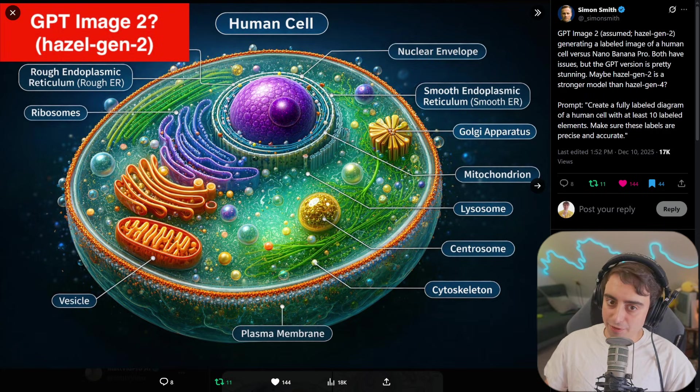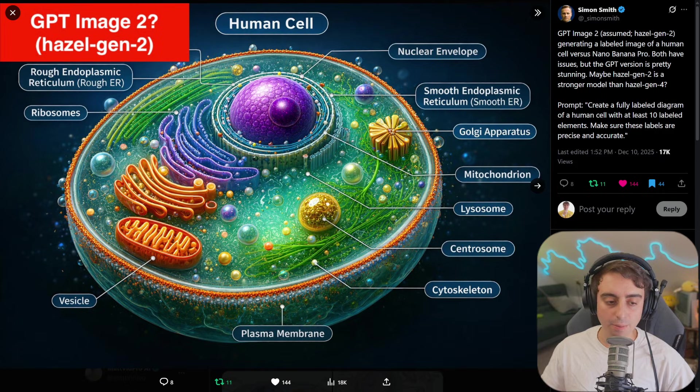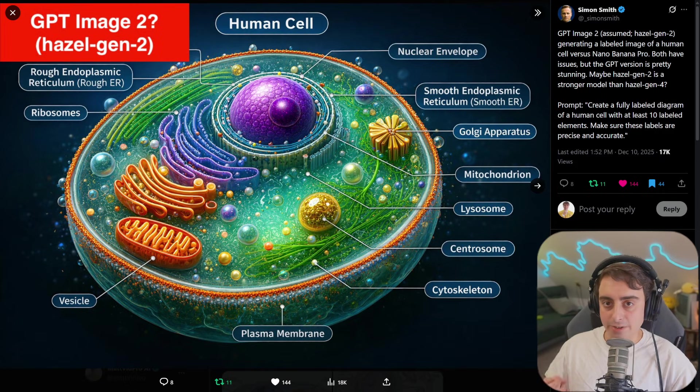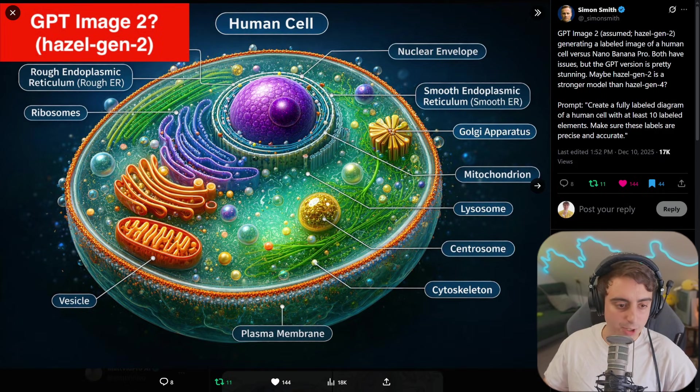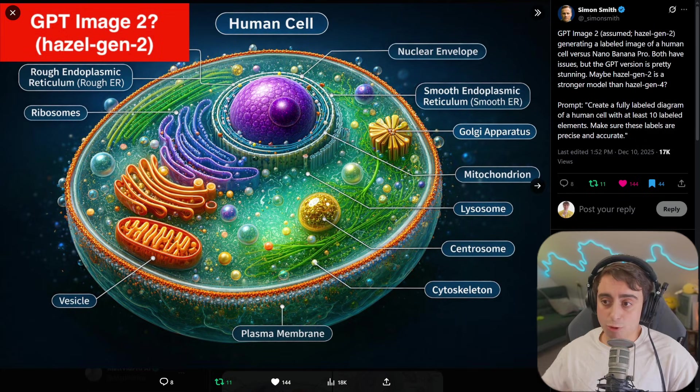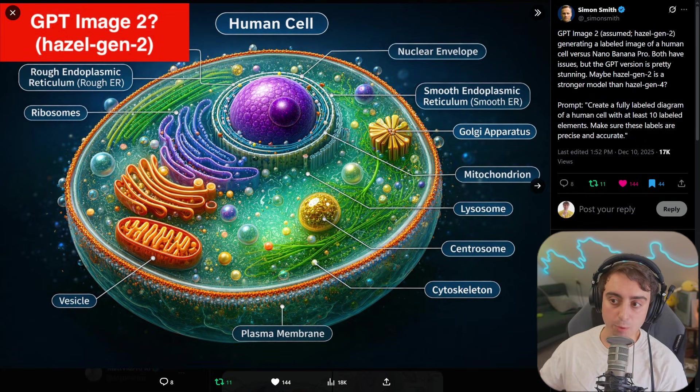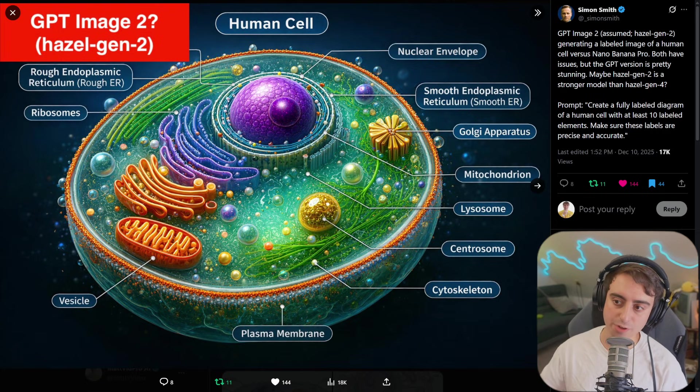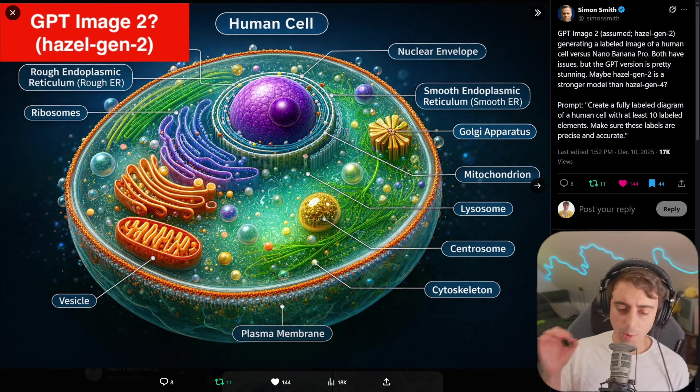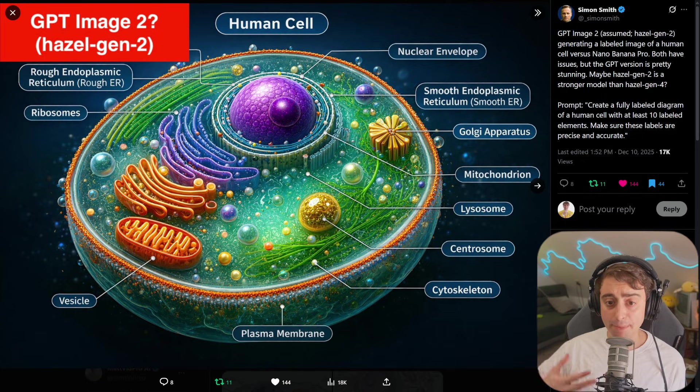And those are big shoes to fill. Nano Banana Pro is insane. I've been using it for all of my thumbnails. Easily the most advanced AI image generator I've ever come across. The prompt here from Simon Smith: Create a fully labeled diagram of a human cell with at least 10 elements. Make sure these labels are precise and accurate. How well did it do? Is this diagram accurate?